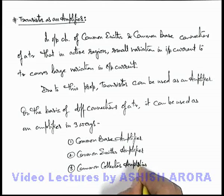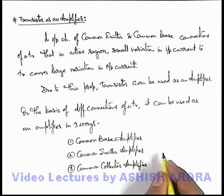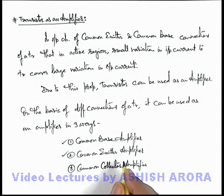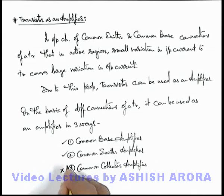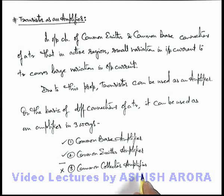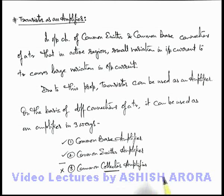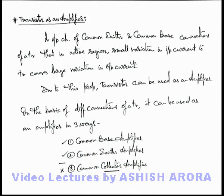The common collector amplifier of a transistor is out of the scope of these lectures. In the upcoming sections, we are going to discuss common base and common emitter amplifiers. For these lectures, we are limiting to this level only and will not discuss common collector amplifier in detail. In general, students can keep in mind that in a common collector amplifier, the collector terminal is taken as a common terminal to both input and output terminals. Let's continue in the coming sections in detail about common base and common emitter amplifiers.